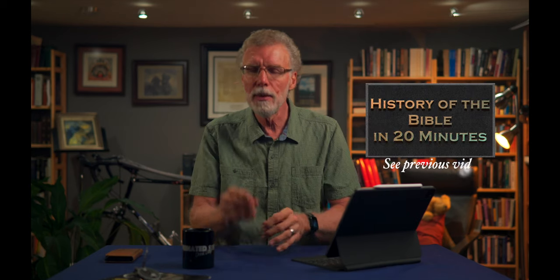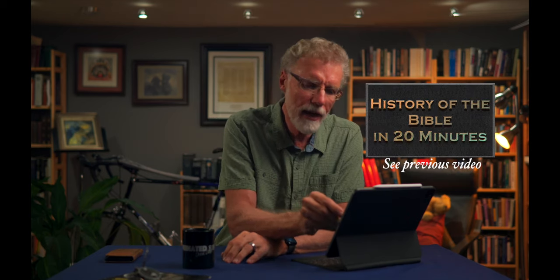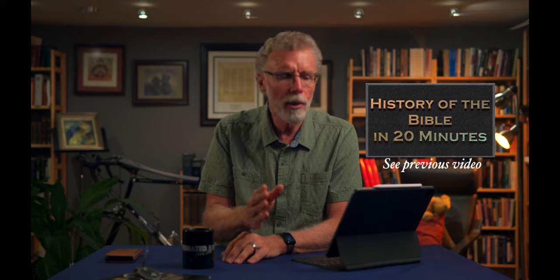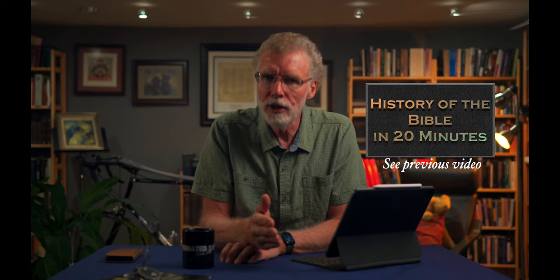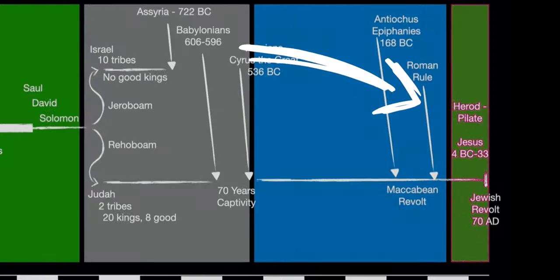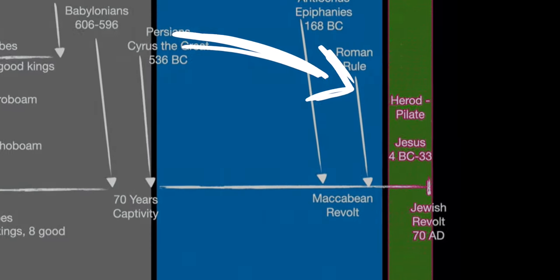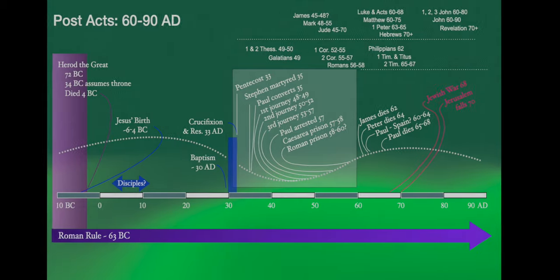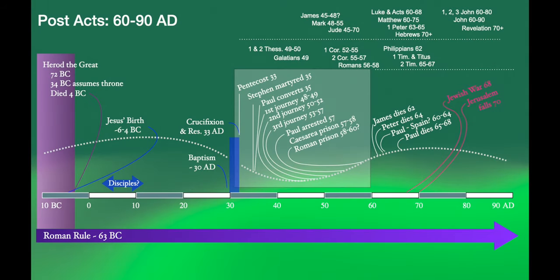In my video on the history of the Bible in 20 minutes, I mentioned how the history of the New Testament is just a narrow sliver of that history — only 100 years at the very most of over a 2,000 year history. If we zoom in on that narrow sliver, that 90 to 100 year time frame of the New Testament, a lot happens. So let's zoom in and take a look at what takes place during those 100 years.